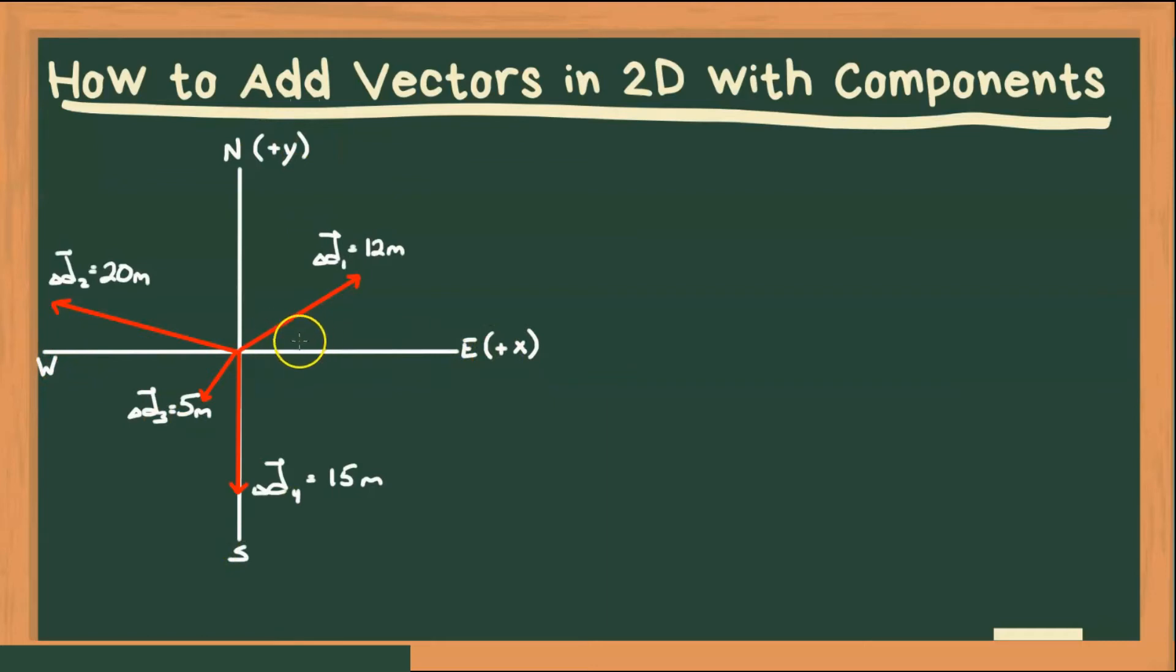And let's say these vectors have angles, 35 degrees, 10 degrees, and 30 degrees. And what we want to do is find some total displacement, where total displacement is the sum of all of these displacement vectors, delta D1, delta D2, delta D3, and delta D4.